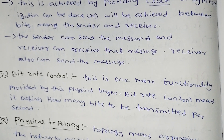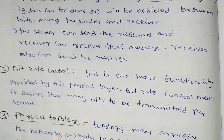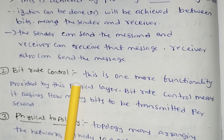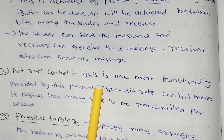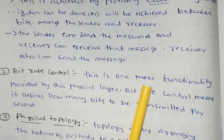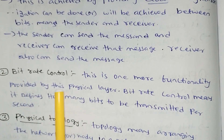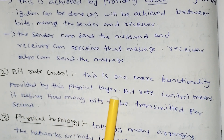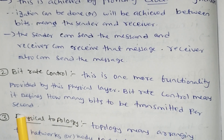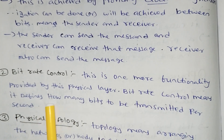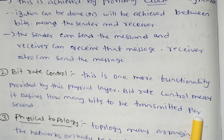The second functionality of the physical layer is bit rate control. This defines how many bits are transmitted per second.